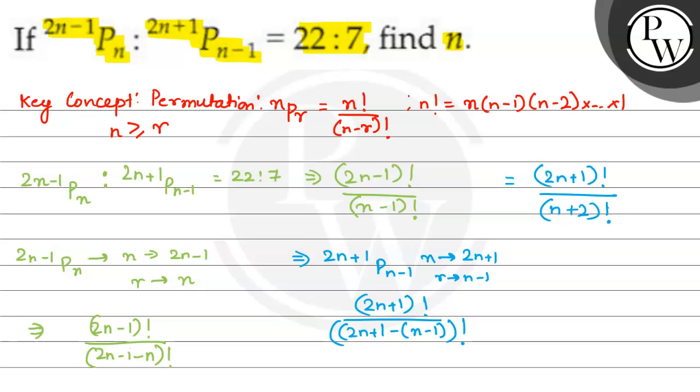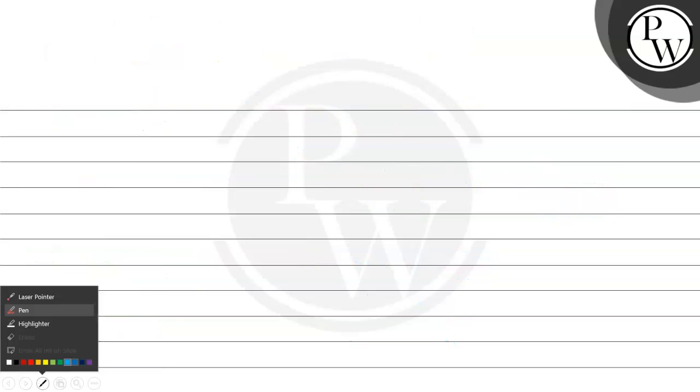This is for 2n minus 1 P_n. So we are going to put this in the ratio. So if divide hai, then I will just put it in multiply. So it is going to be 2n minus 1 factorial, n minus 1 factorial multiplied by n plus 2 factorial and 2n plus 1 factorial is equal to 22 by 7.